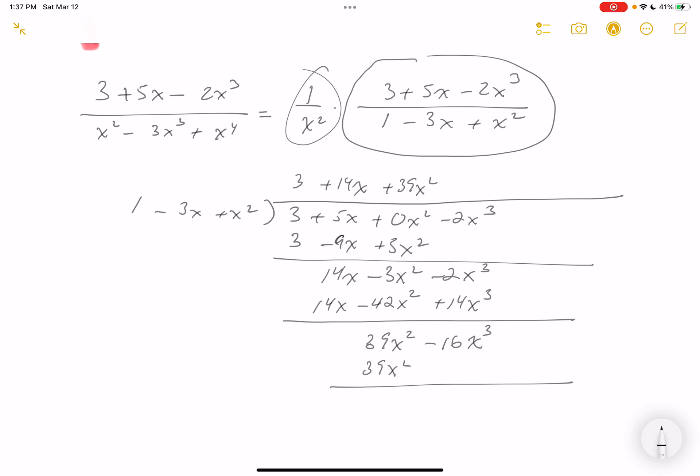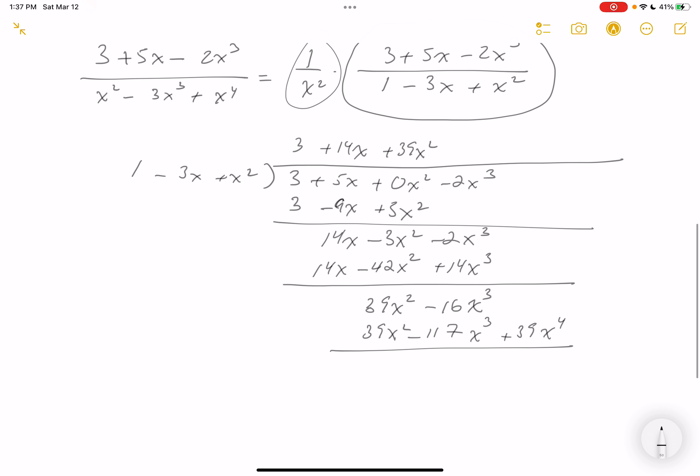Let's see, 90 and 27 is 117. So 117x cubed plus 39x to the fourth. Got to subtract. That's going to be 101x cubed minus 39x to the fourth.